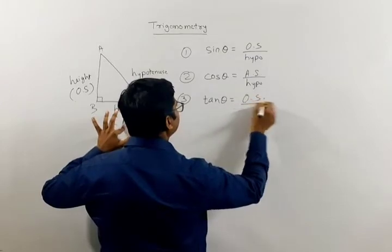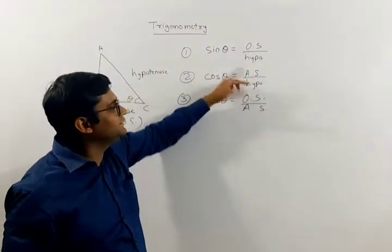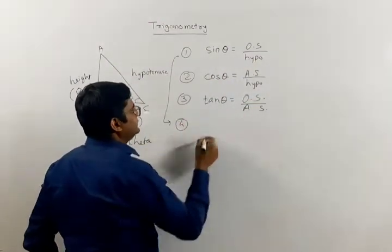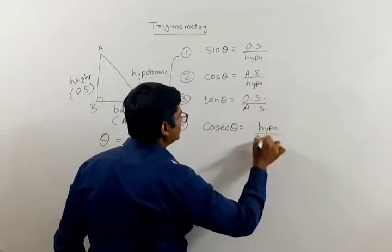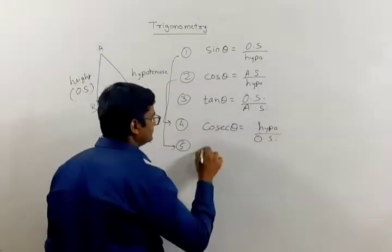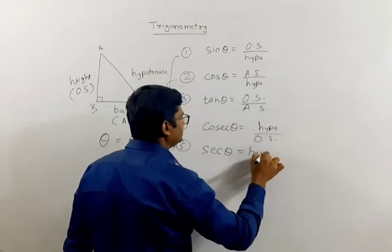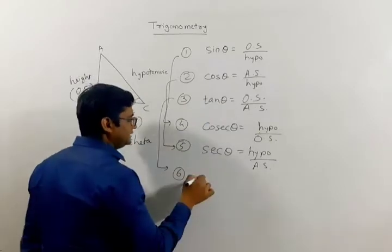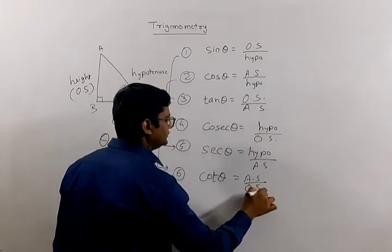The other three ratios are reciprocals of the first three. For sine, the reciprocal ratio is called cosec theta, defined as hypotenuse upon opposite side. For cos, the reciprocal is called sec theta, which is hypotenuse upon adjacent side. The sixth ratio is the reciprocal of tan theta, called cot theta, and that is adjacent side upon opposite side.